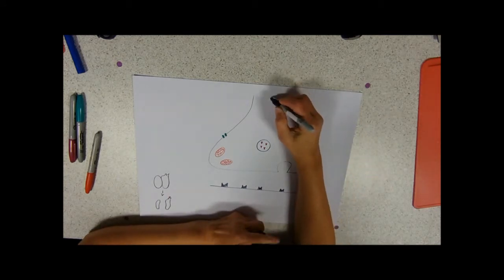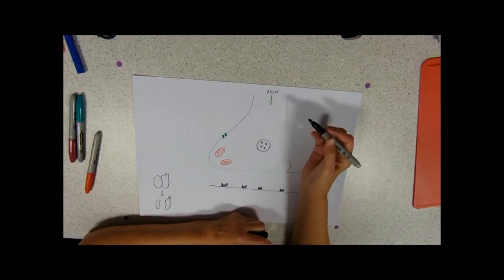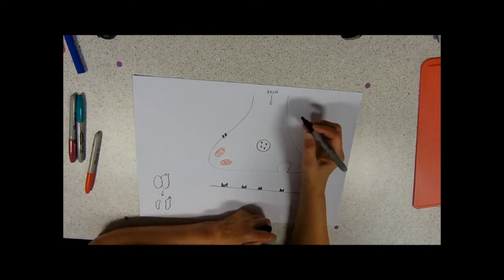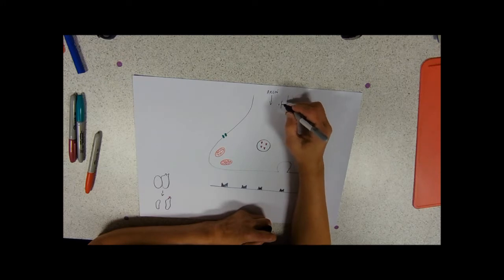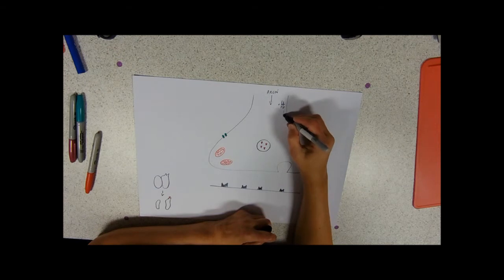This bit up here is coming from an axon, and our axon, its job is to transmit nerve impulses. So what we're going to have coming down here, if there's a stimulus, is that wave of action potentials heading down.